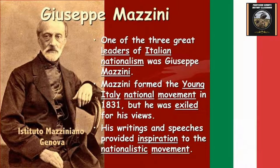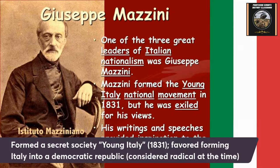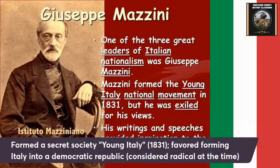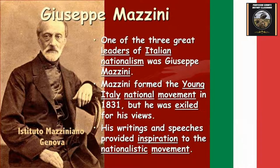Mazzini formed a secret society in Europe called Young Italy, founded around 1831, mostly comprised of men 40 and younger. They favored unifying Italy as a democratic republic. Mazzini was considered radical for his time, and because of his radical nature and the age of Metternich, he was later exiled and forced to flee Italy to other states. He wouldn't really come back to Italy until after Italy actually unified later.